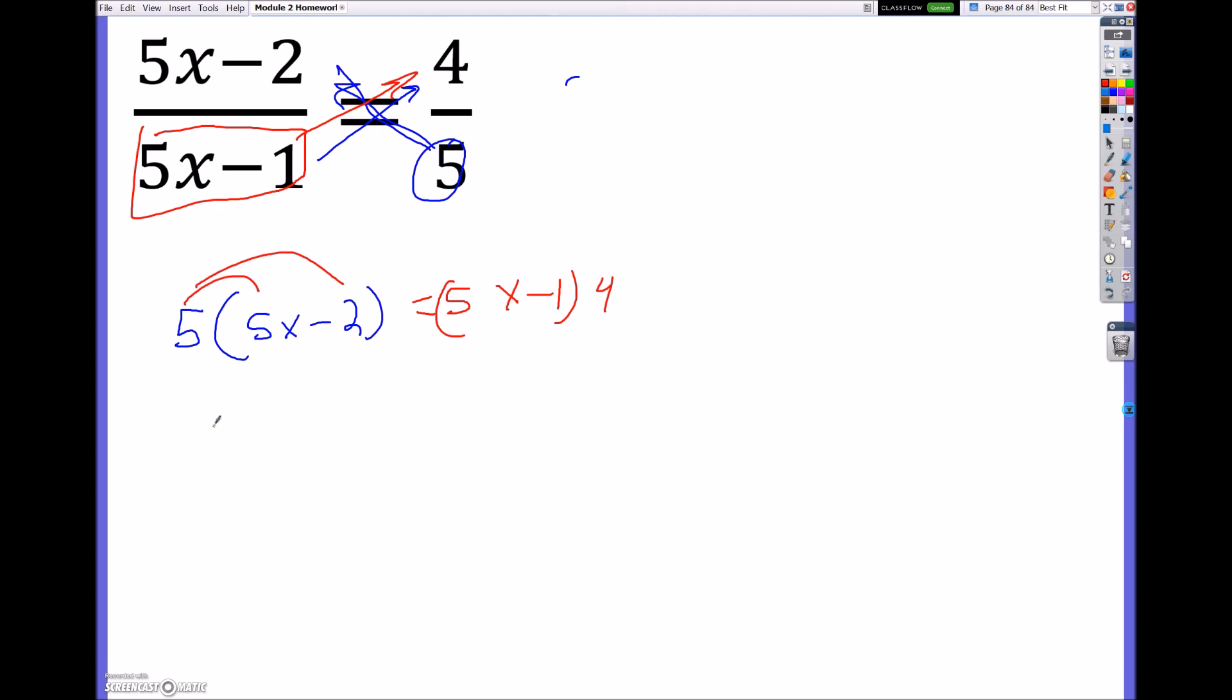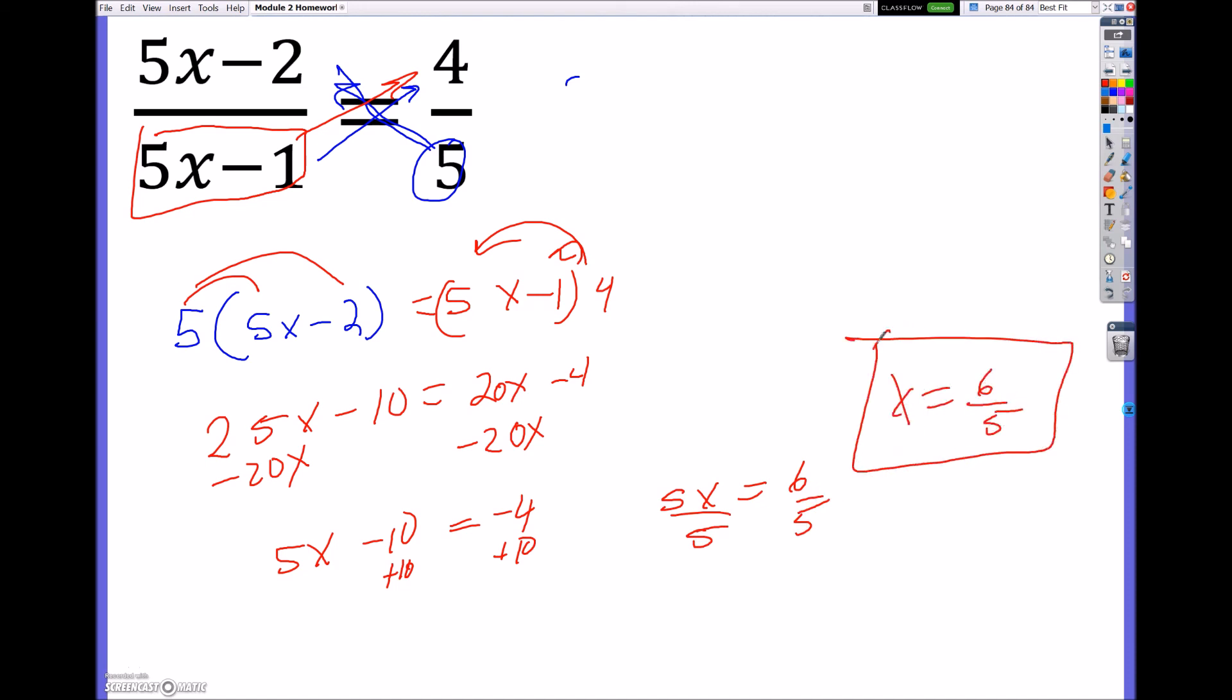So what I'm going to do is distribute this to get 25x minus 10 is equal to 20x minus 4. All right, I like to keep my x as positive, so I'm going to minus 20x on both sides. This will give me 5x minus 10 is equal to negative 4. I'm going to add 10 on both sides to get 5x is equal to 6. And I'm going to divide both sides by 5 to get x is equal to 6 over 5. And that's your final answer there.